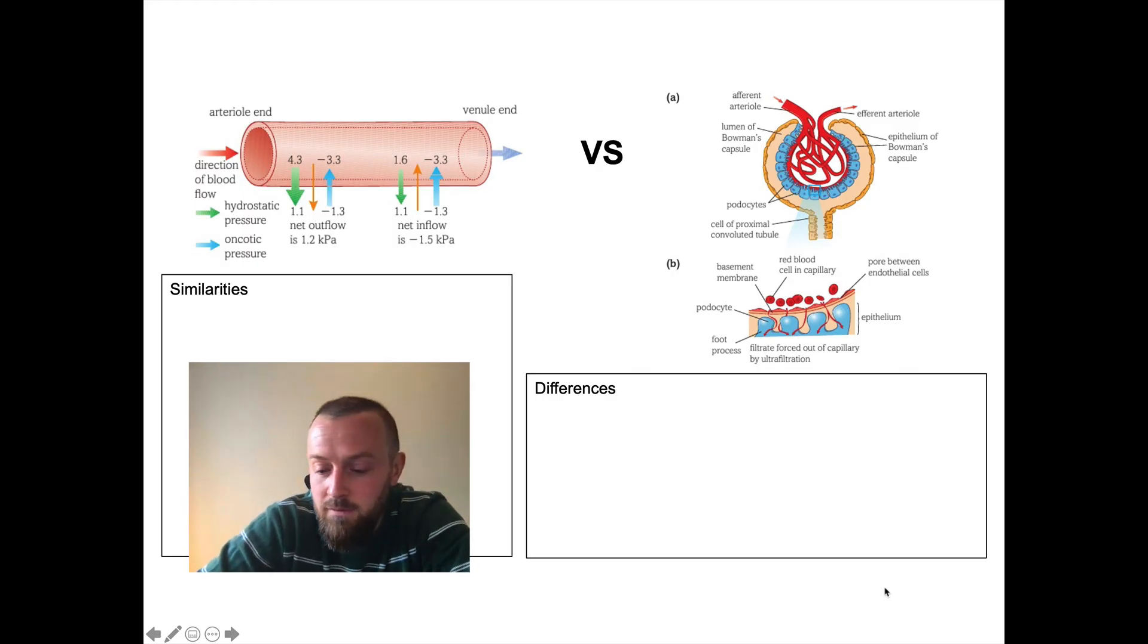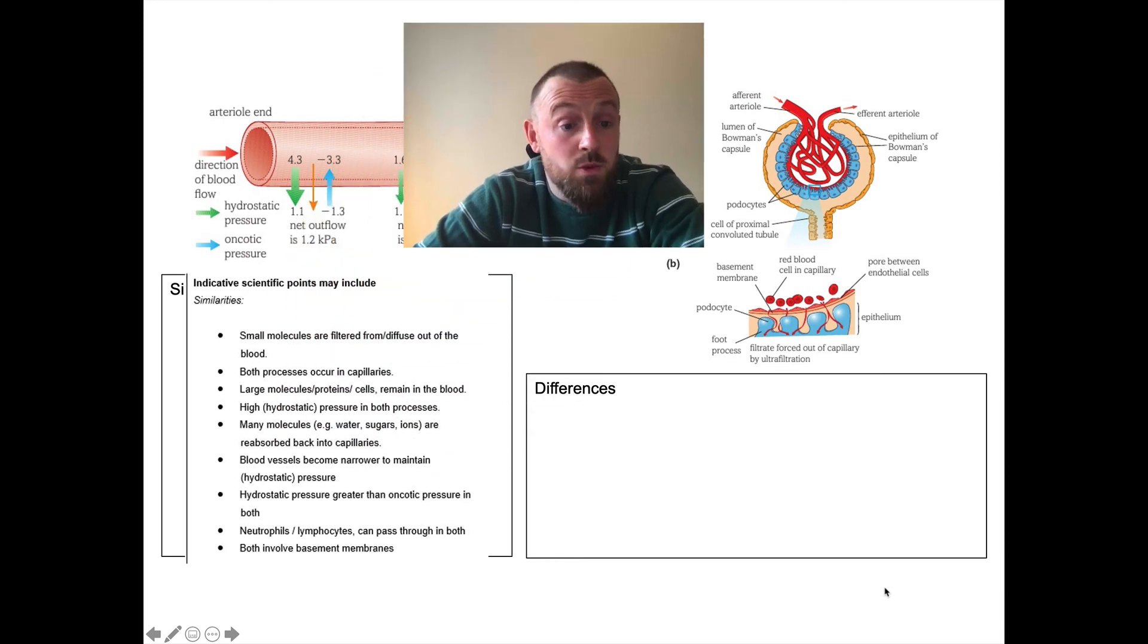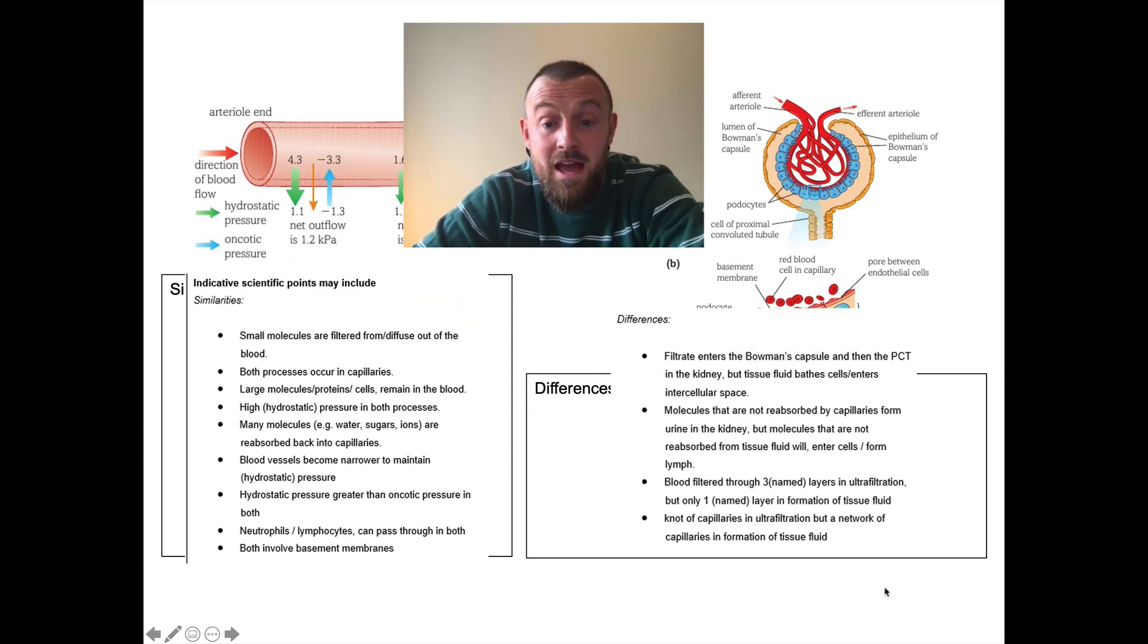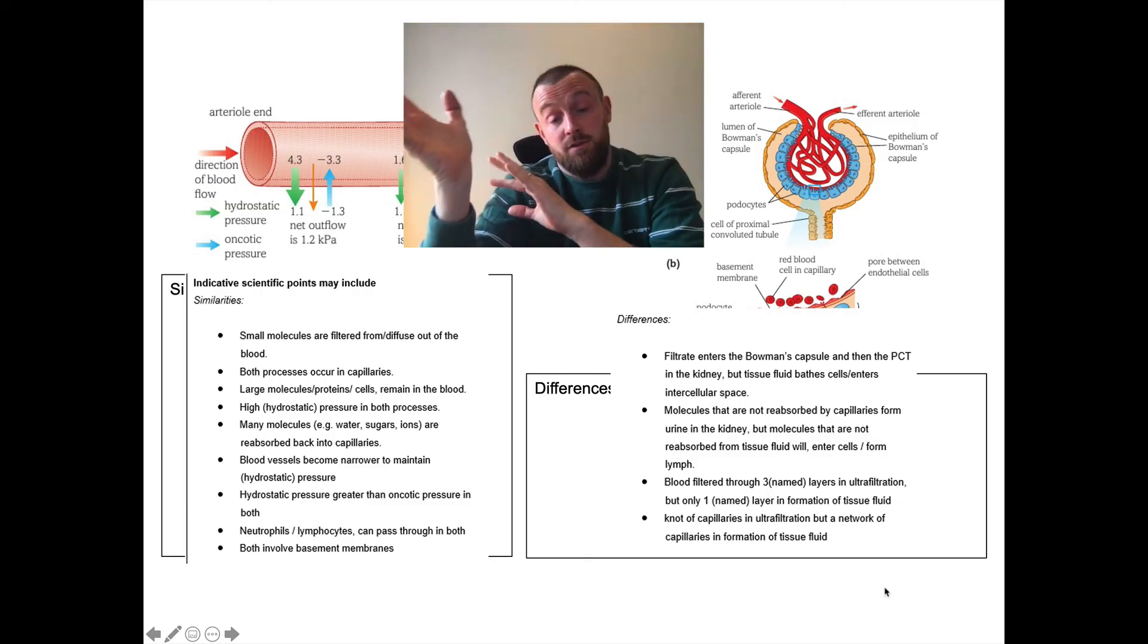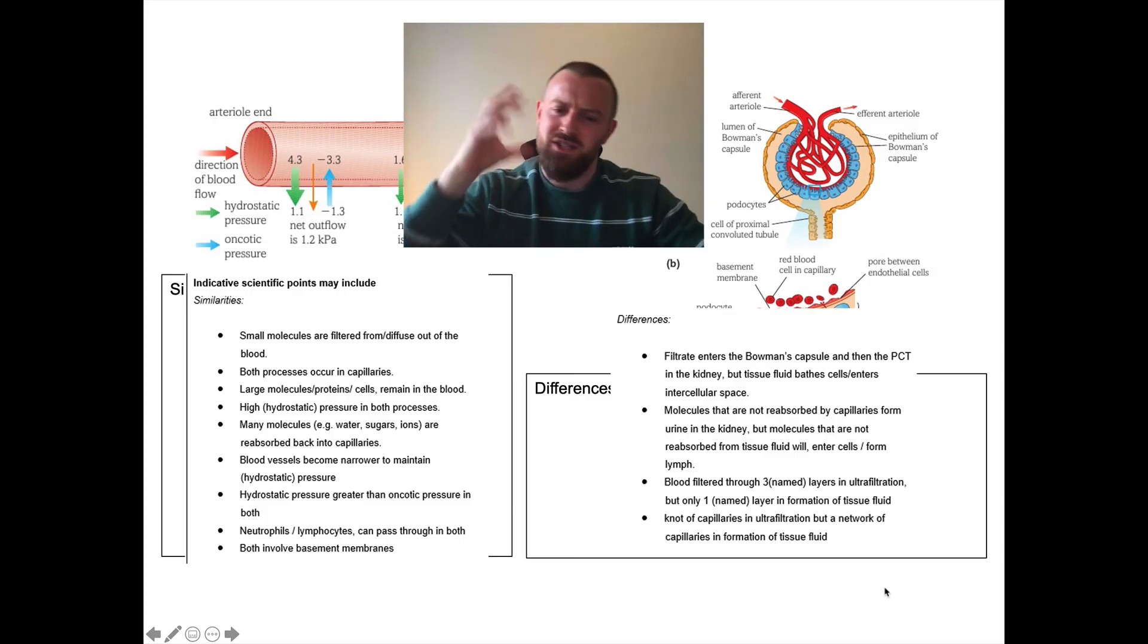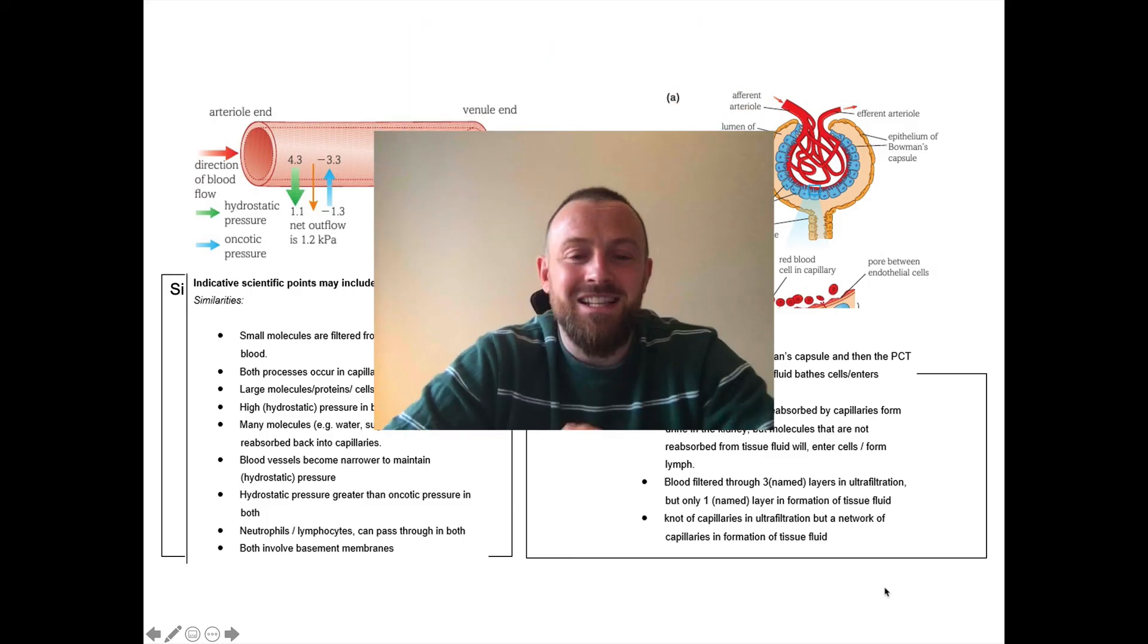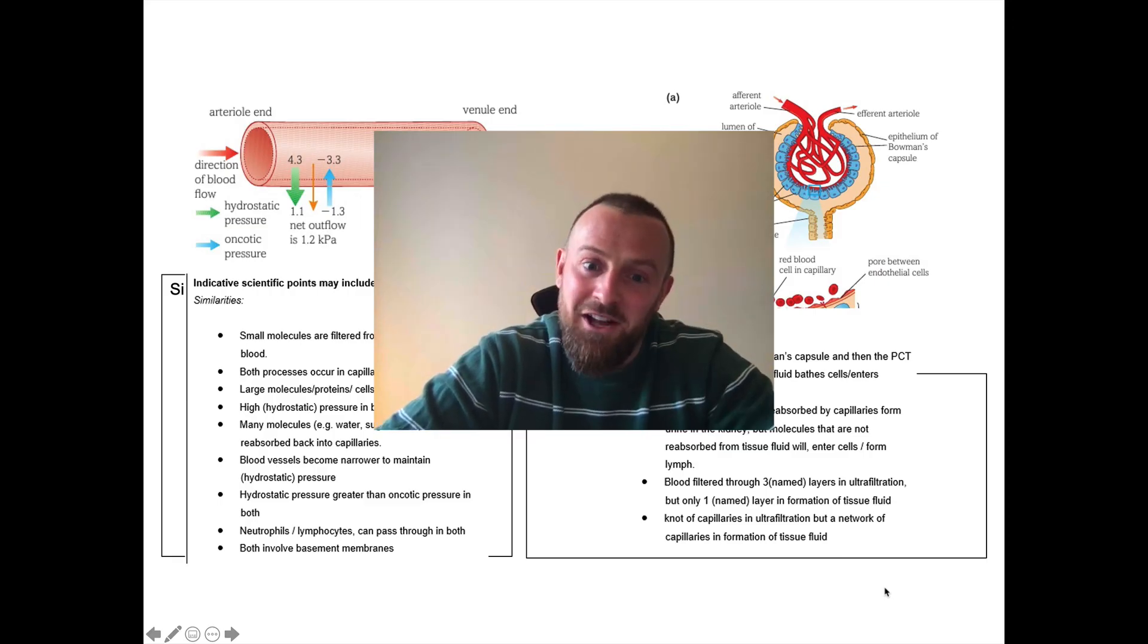So are you ready? The exam board said these were similarities and these were differences. OK. Did you get some of those? Do you think you could write a six mark answer based on those bullet points and fit it into continuous prose? Remembering to directly make direct similarities and direct differences when you're comparing and not just to describe one process and then describe the other. OK, so that was a little quick session on exam technique. I hope you found it useful and good luck preparing for any assessments that are coming up. Bye bye.